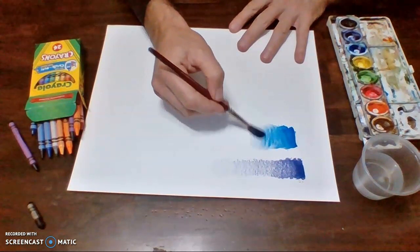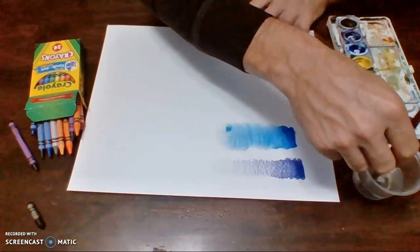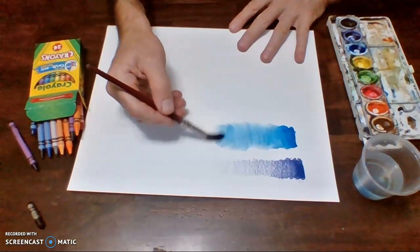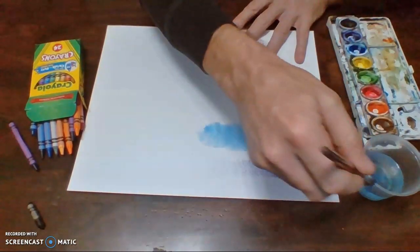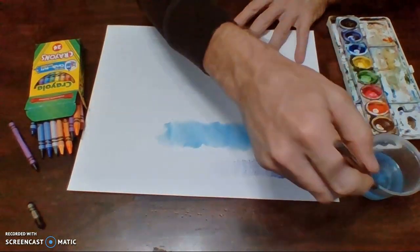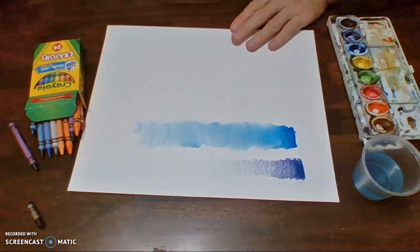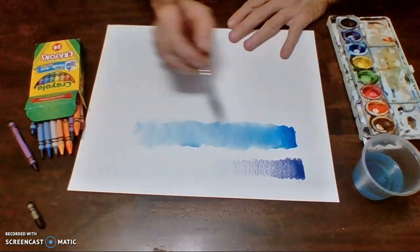And I'm going to start coming down. See, it's starting to get lighter and lighter. Now, let's get a little more water and keep coming down. Get a little more water until you have almost no paint left in the brush. And then when you're painting with nothing left, that's a pretty good value scale. So that's basically how you do it.